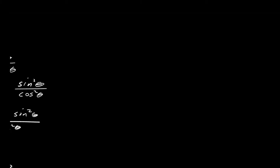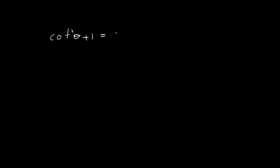Let's write out the identity that we want to prove. It's trigonometric identity 5, which is that cotangent of theta squared plus 1 is equal to the cosecant of theta squared. Recall that the cosecant of theta is just the reciprocal of the sine function, so it's 1 over the sine of theta. So the cosecant of theta squared would be 1 over the sine of theta, all squared.